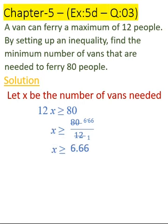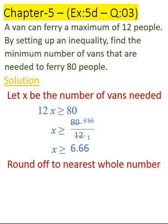When x is greater than or equal to 6.666, that means the number of vans are greater than or equal to 6.666. We round this number to the nearest whole number.